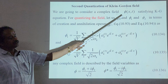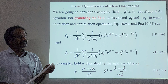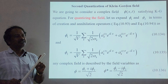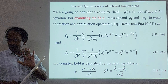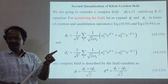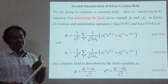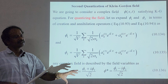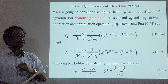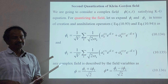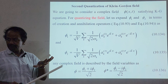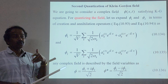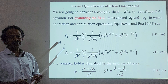We are going to consider a complex field. There exist real fields as well as complex fields. For a real field, a photon creates a particle and an antiparticle. However, if we have more than two particles — a number of photons, a number of particles, and a corresponding number of antiparticles — and we do not know which combination will take place, we must use a complex field.